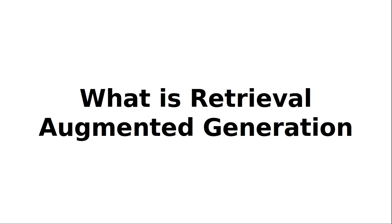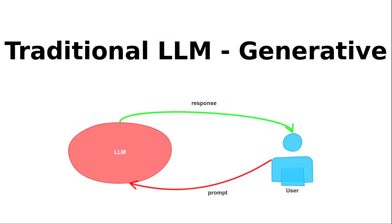So it is retrieval augmented generation — retrieval increased generation. What is it from a technical point of view? Let's first look at the generation part of an LLM. We have traditional LLMs, and users can ask them questions. LLMs stands for large language models such as GPT, PaLM, LLaMA, LLaMA2 and others. A user asks the LLM a question and the LLM gives the user a response.